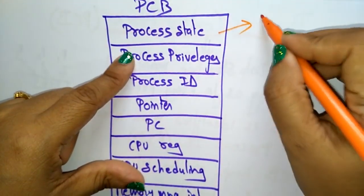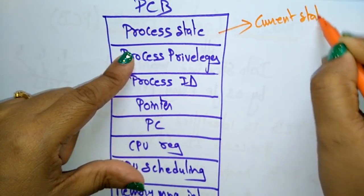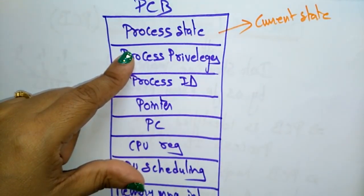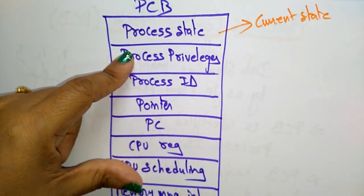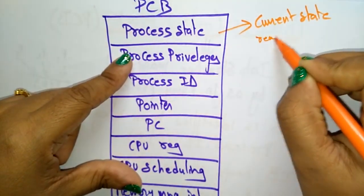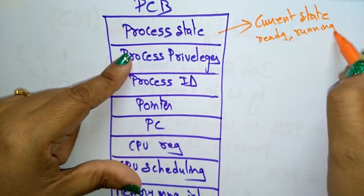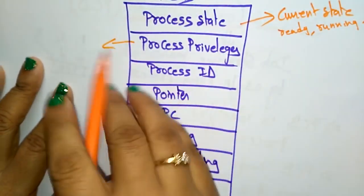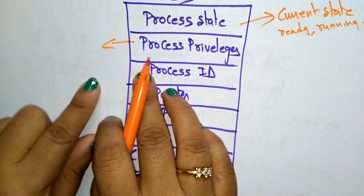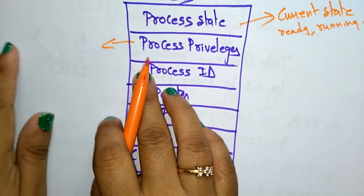The process state indicates the current state of a process — whether it is in running state, ready state, or waiting state.